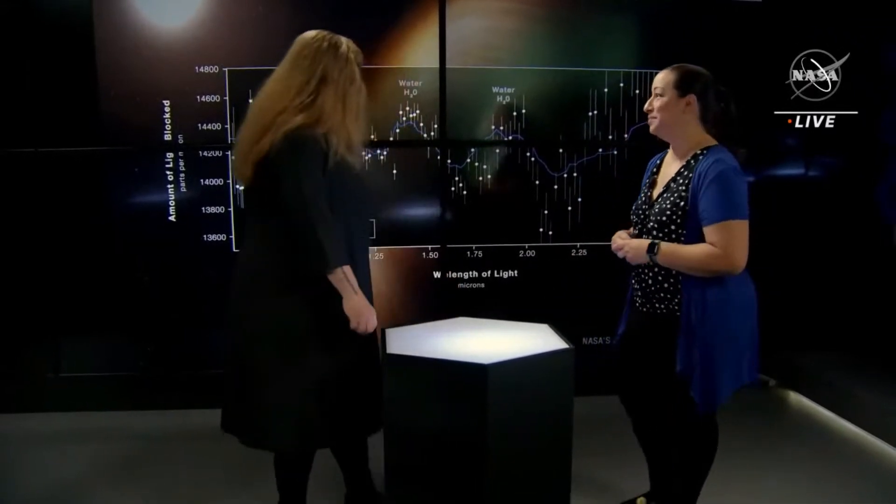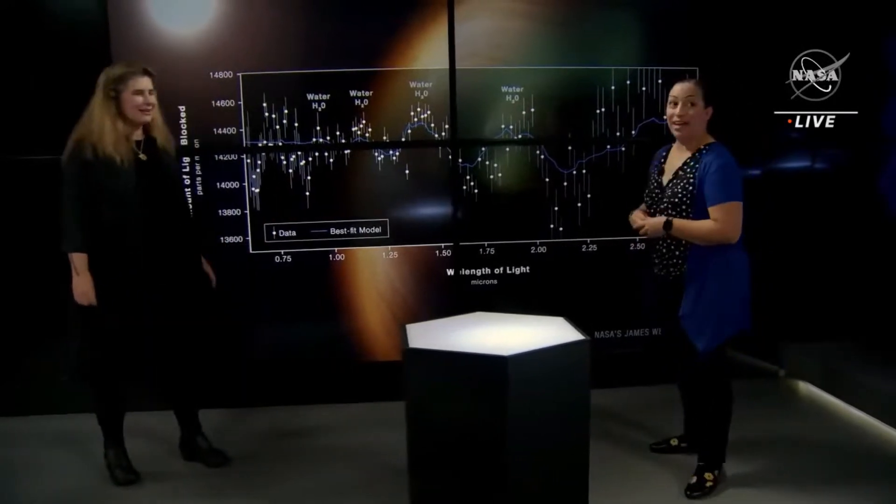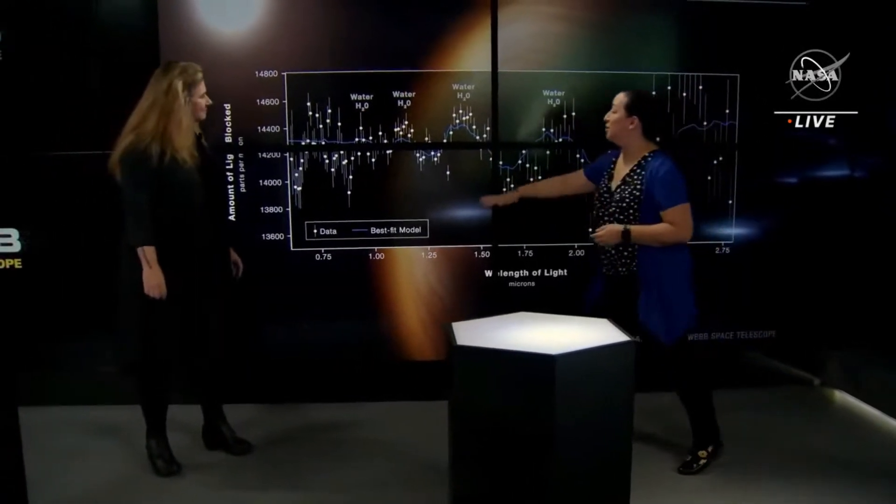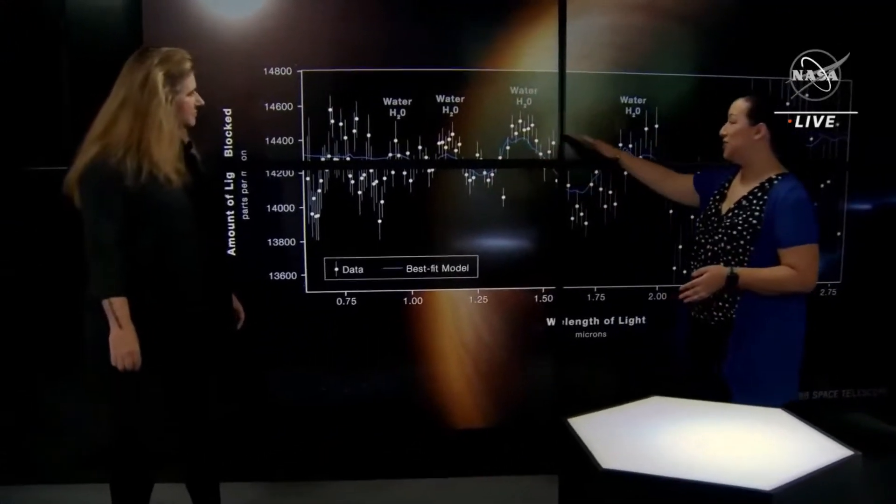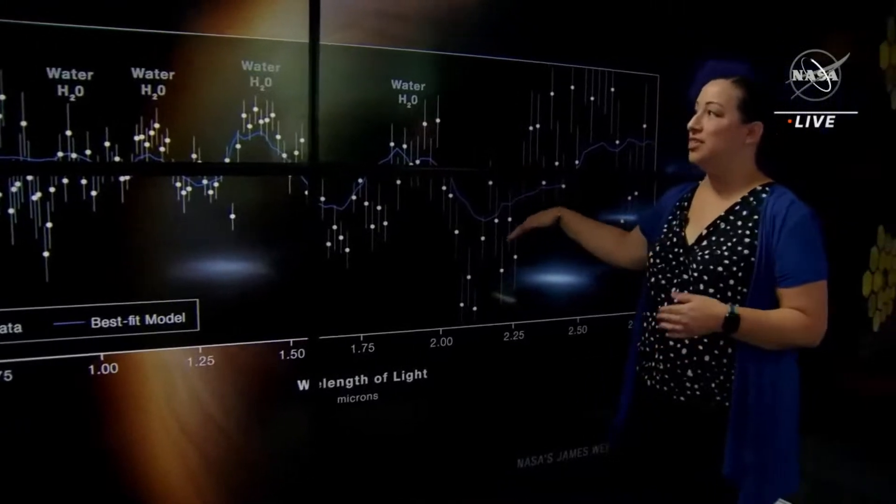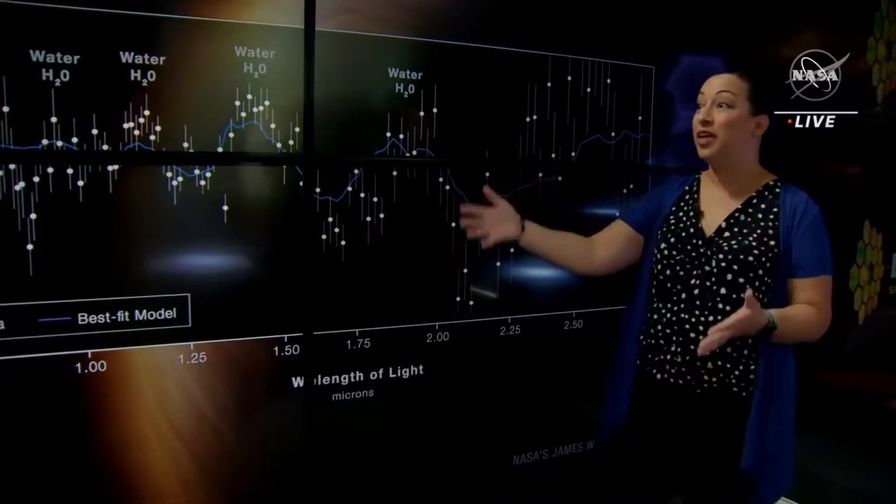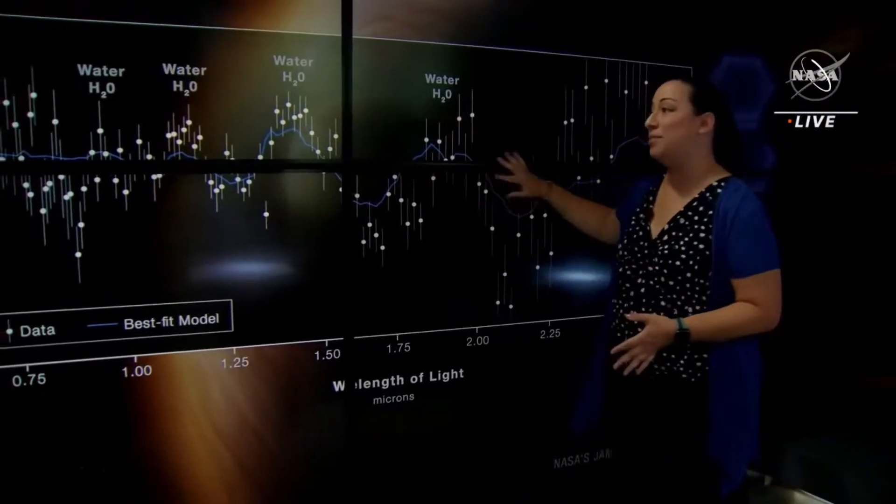So we have the spectrum up here. Is there anything you'd like to highlight particularly? Yeah, absolutely. So we have several features marked here. So I call them features. They're these, what I just referred to as bumps and wiggles. But what you're seeing here is a telltale signature, the chemical fingerprint of water vapor in these atmospheres, in the atmosphere of this specific exoplanet.